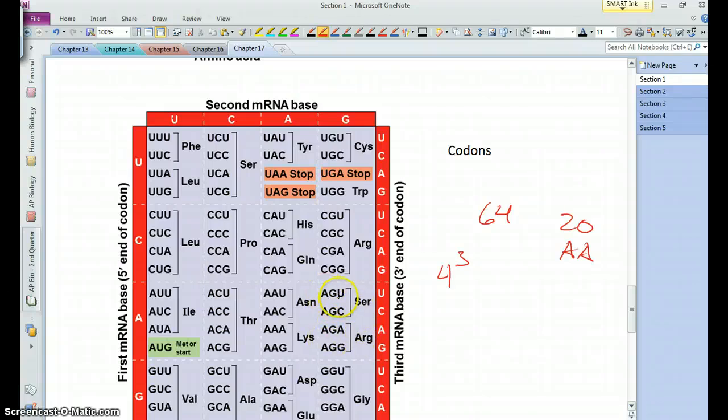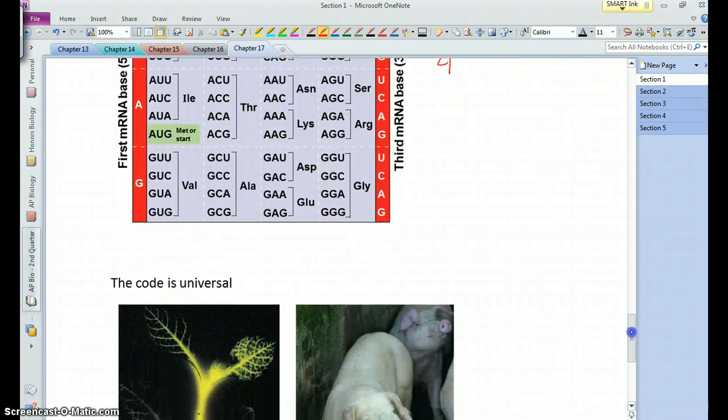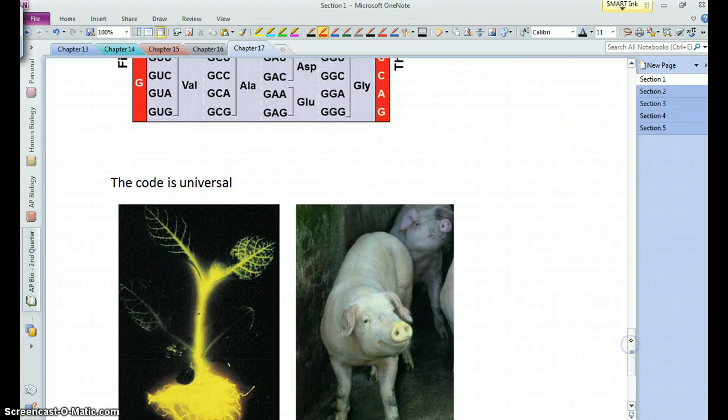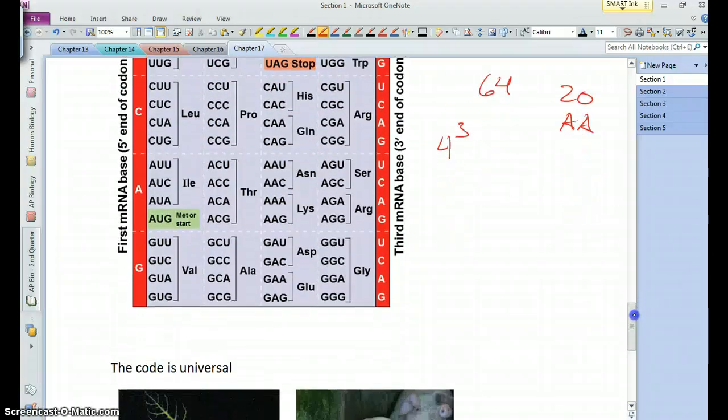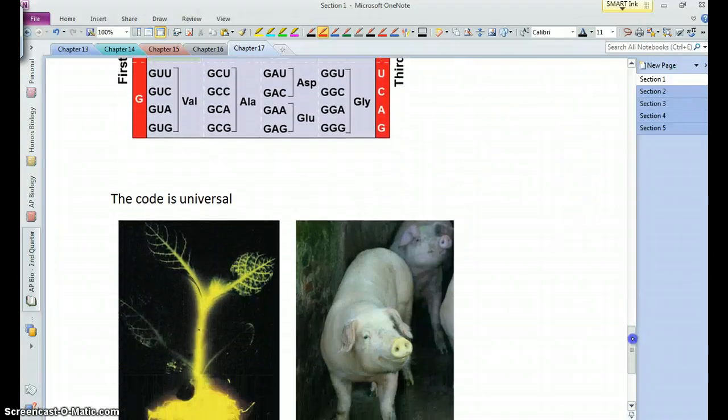Some of them it does, like serine and arginine. They both begin with AG, but it depends on whether it's UC or AG in the third base of the codon.